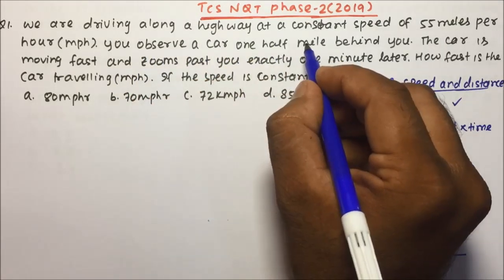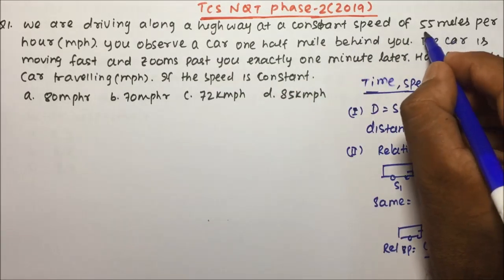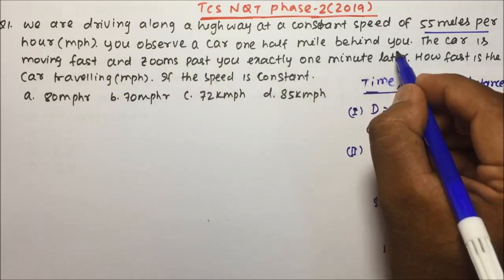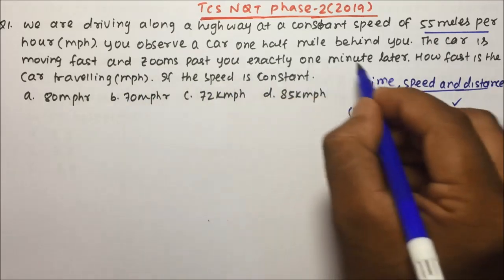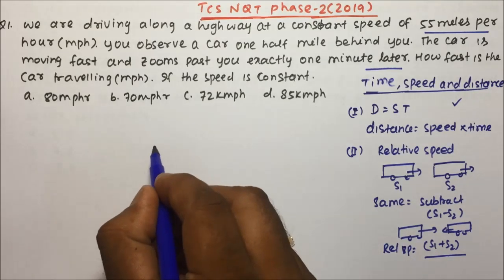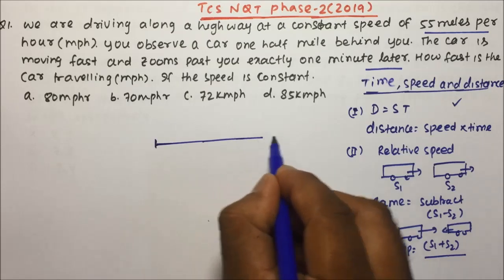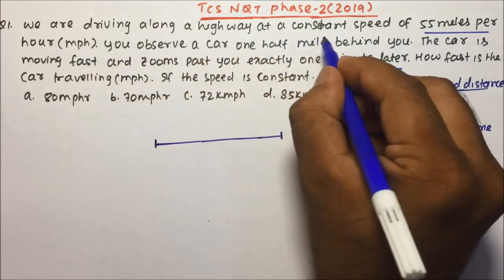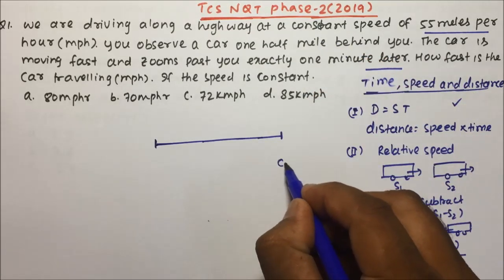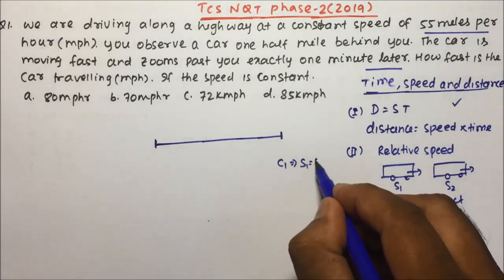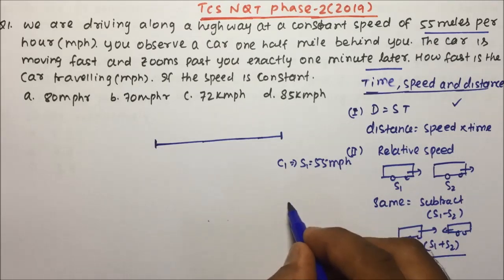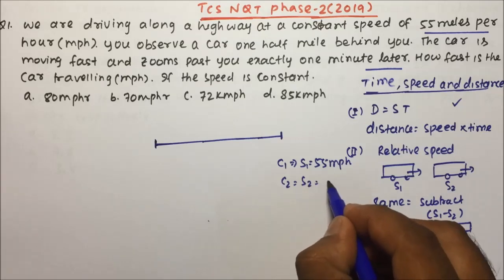The first question: when we are driving along a highway at a constant speed of 55 miles per hour, you observe a car one-half mile behind you. The car is moving fast and zooms past you exactly one minute later. How fast is the car travelling if the speed is constant? Car one speed is 55 miles per hour, and car two speed we have to calculate.